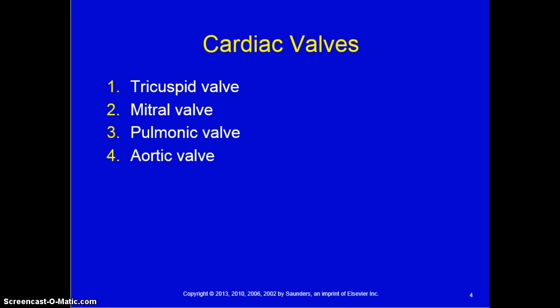We need to talk about the four cardiac valves: the tricuspid, mitral, pulmonic, and aortic valves. The AV valves separate the atria from the ventricles — the tricuspid valve separates the right atrium from the right ventricle, and the mitral or bicuspid valve separates the left atrium from the left ventricle. During ventricular diastole, these valves act as funnels to move blood from the atria to the ventricles, and during systole they close to prevent backflow or regurgitation. The pulmonic valve separates the right ventricle from the pulmonary artery, and the aortic valve separates the left ventricle from the aorta.